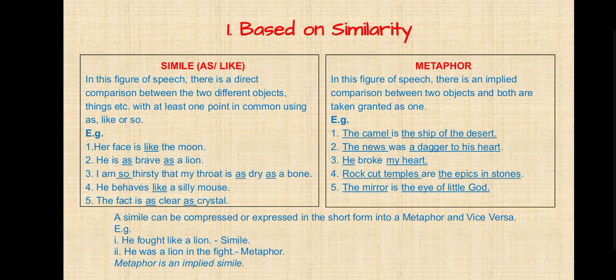Now metaphor. In this figure of speech there is an implied comparison between two objects, and both are taken as one — some one common characteristic is shared. Examples: 'The camel is the ship of the desert' — how the camel swiftly walks in the desert, same as a ship floats on water. 'The news was a dagger to his heart' — the news was so sad the person got hurt. 'He broke my heart' — his behavior broke the speaker's heart. 'Rock-cut temples are the epics in stone' — the carving tells a story. 'The mirror is the eye of the little god' — a mirror always speaks truth.